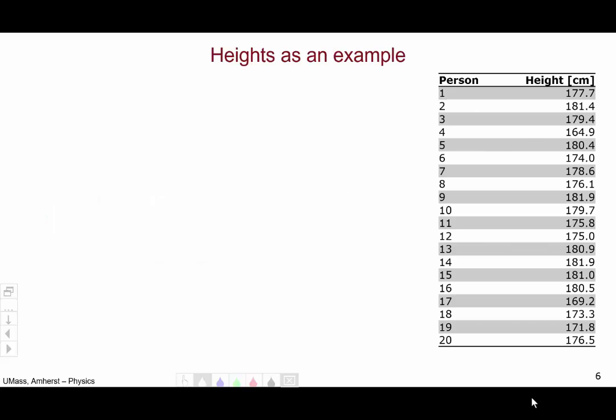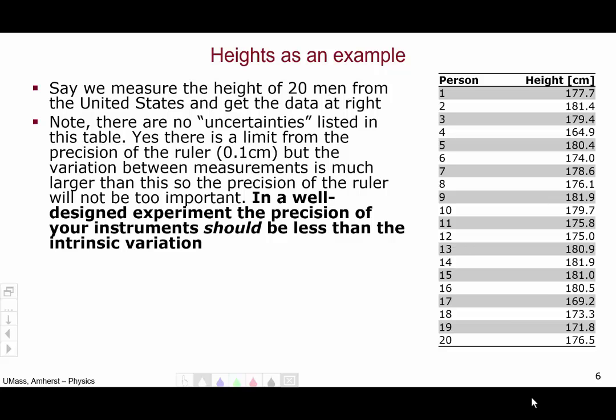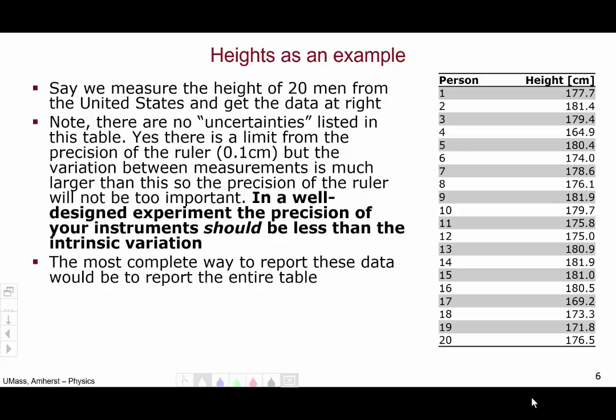To talk about the ideas of mean and standard deviation, it's helpful to have an example. Say we took the height of 20 men from the United States and presented the data in the table at the right. Note, there are no uncertainties listed in this table. Yes, the ruler that we're using has some limit of precision, which is apparently 0.1 cm according to this table. But the variation between measurements is much larger than this, so the precision of the ruler won't be too important. In a well-designed experiment, the precision of your instruments should be much less than the intrinsic variation that you are trying to measure.